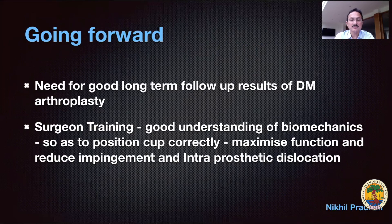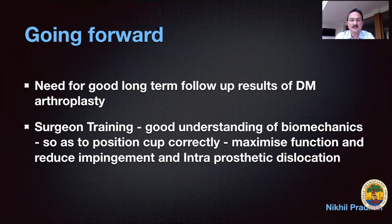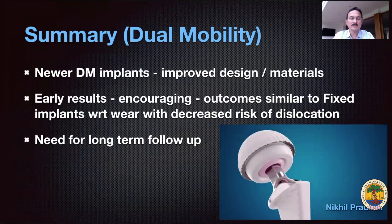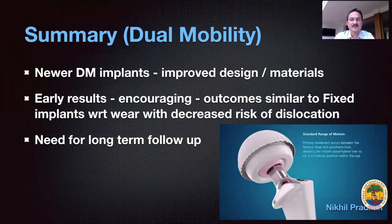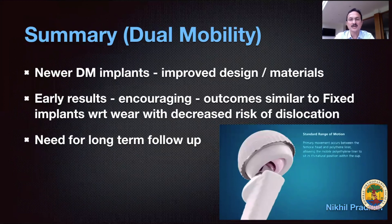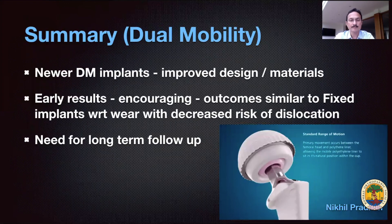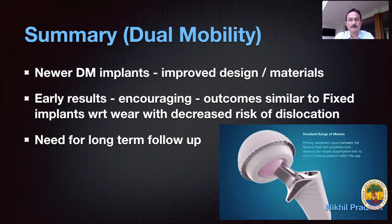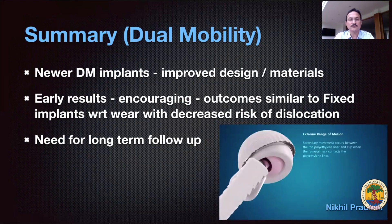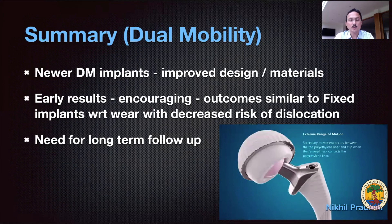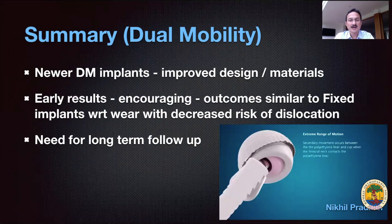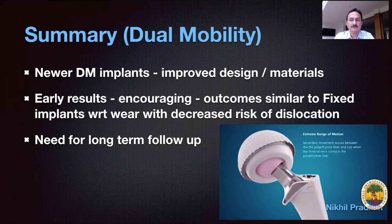Going forward, there is a need for long-term follow-up. Surgeon training will be crucial so that we understand the biomechanics and how to correctly position the cup to maximize function and reduce impingement and intra-prosthetic dislocations. In summary, newer DM implants have improved biomechanics and design, highly cross-linked poly has reduced wear, early results are encouraging with outcomes similar to fixed implants regarding wear, with a decreased risk of dislocation, and there is a need for long-term follow-up.